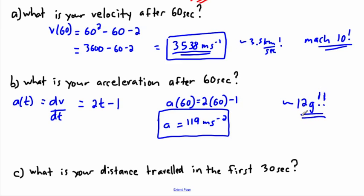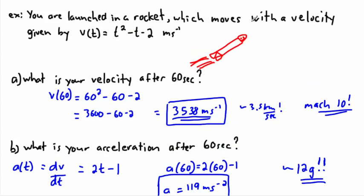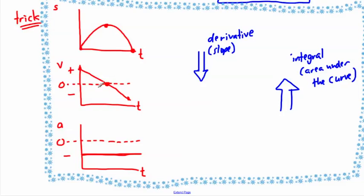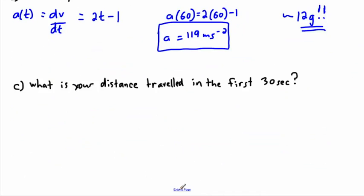At 12 g's you're very likely passed out. Now, what's your distance traveled in the first 30 seconds? I have an equation for velocity but need distance. Using our trick: given velocity-time, to find displacement I take the integral. So my displacement s(30) = integral from 0 to 30 of v(t) dt.